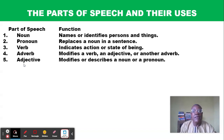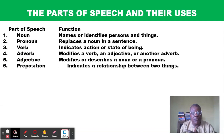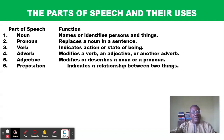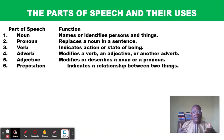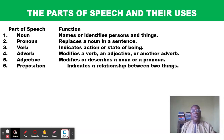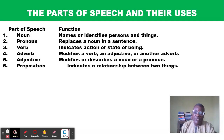Number five: adjective. An adjective modifies or describes a noun or a pronoun. Number six: preposition. A preposition indicates a relationship between two things. For example, 'The students are in the class' — the preposition 'in' indicates the relationship between the students and the class. 'The book is on the table' — the preposition 'on' shows the relationship between the book and the table.